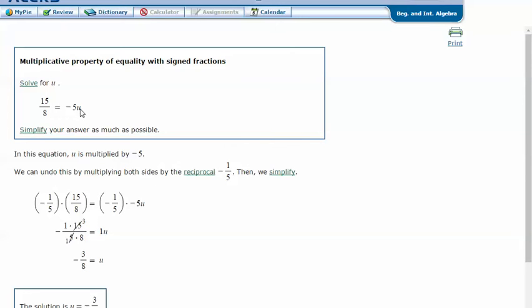In this equation, u is multiplied by negative 5. We can undo this by multiplying both sides by the reciprocal, negative 1/5. Then we simplify. That's like looking at this as negative 5 over 1 times negative 1 over 5 to cancel that out to just get u by itself.